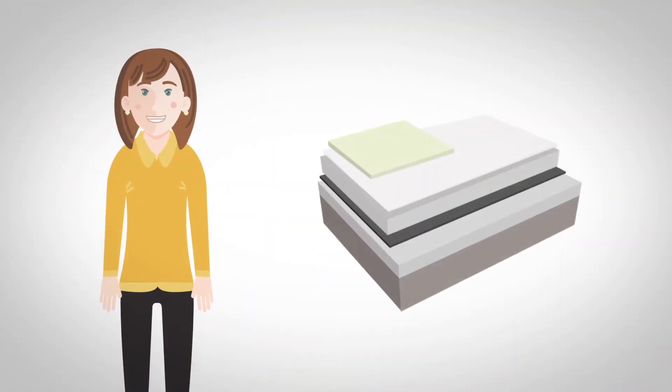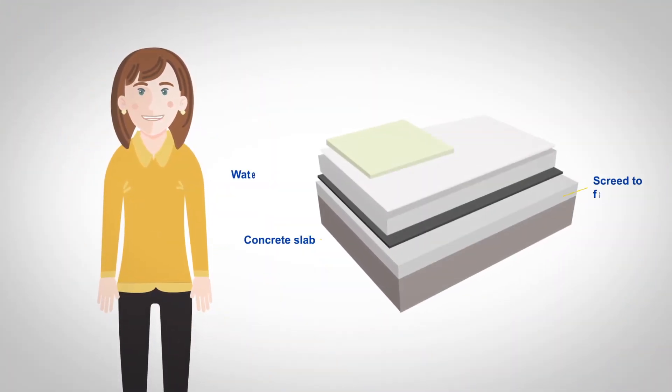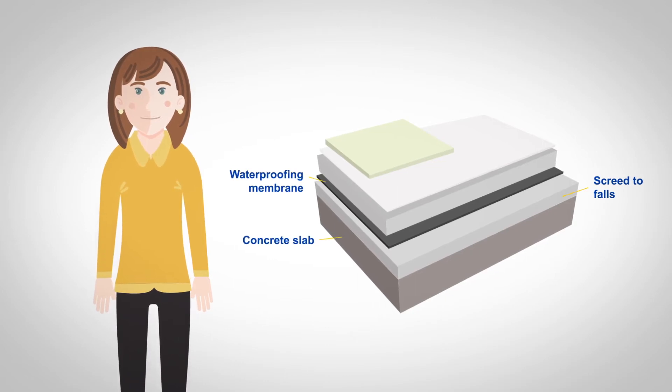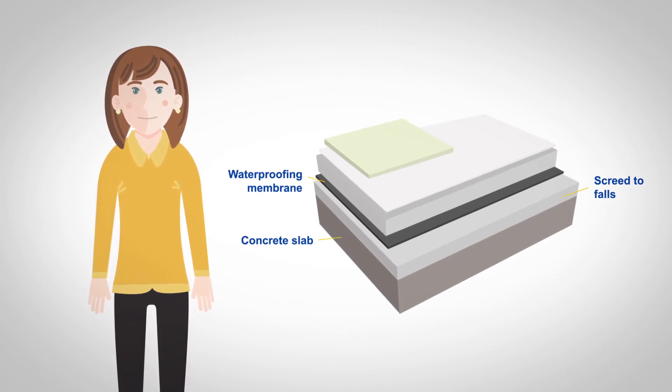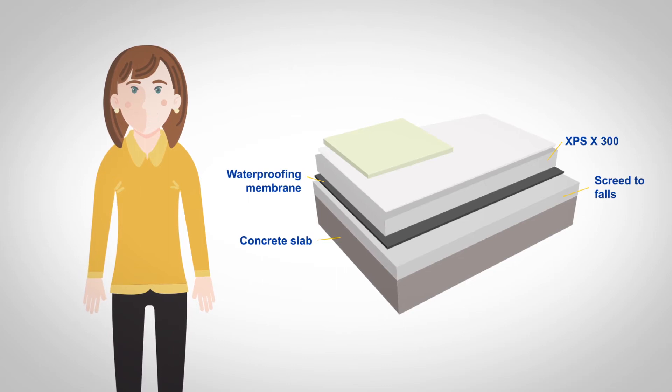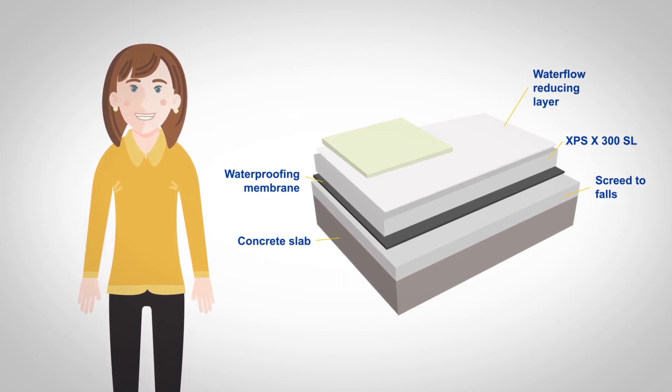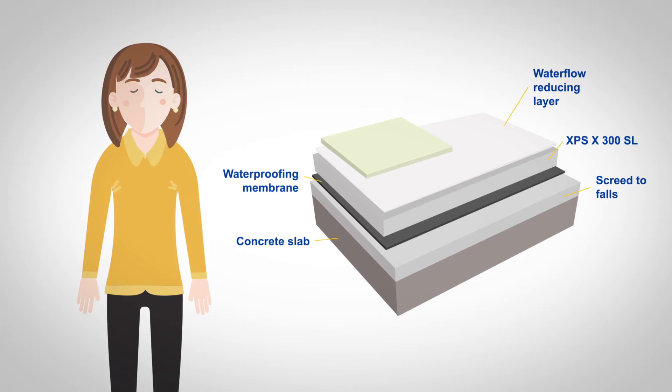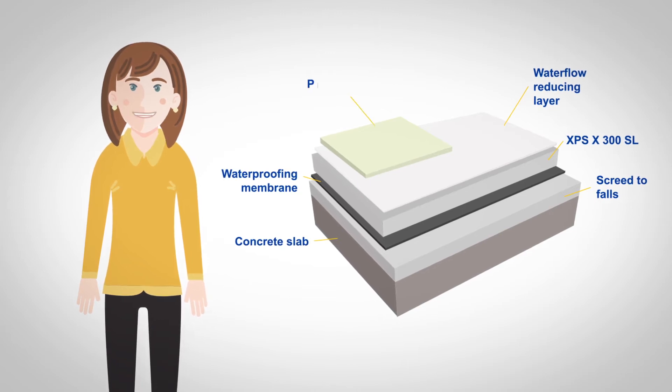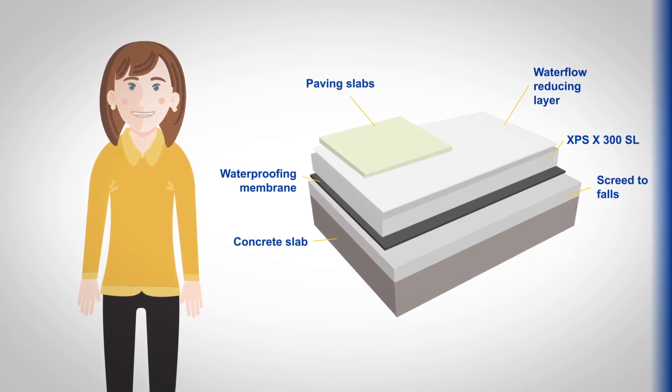In a conventional inverted flat roof, the waterproofing membrane is installed directly on top of the structural deck. The insulation is then placed on top, followed by a water flow reducing layer. Everything is then held in place by gravel ballast or paving slabs, positioned on spacers.